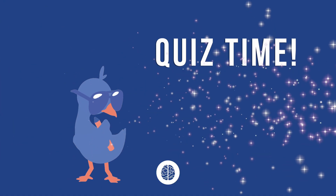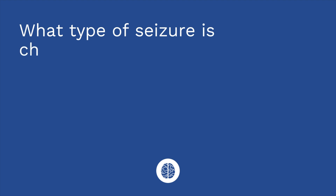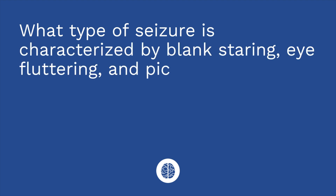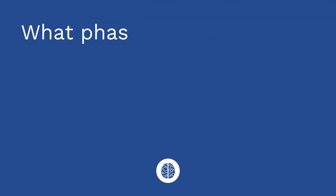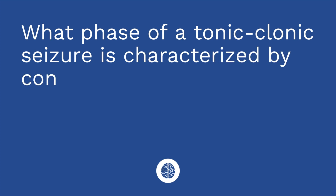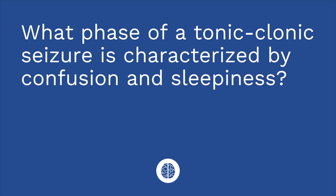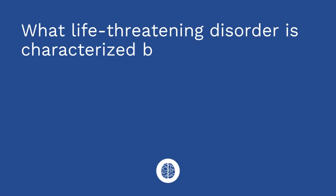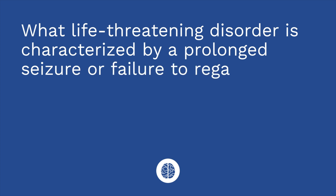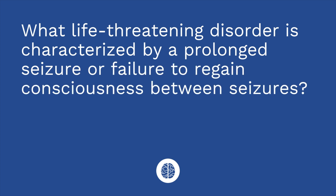It's time for a quiz. Question one: what type of seizure is characterized by blank staring, eye fluttering, and picking at clothes? The answer is an absence seizure. Question two: what phase of a tonic-clonic seizure is characterized by confusion and sleepiness? The answer is the post-ictal phase. Question three: what life-threatening disorder is characterized by a prolonged seizure or failure to regain consciousness between seizures? The answer is status epilepticus.